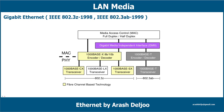To summarize the Gigabit Ethernet versions: IEEE 802.3z was released in 1998 using fiber optic and coaxial cable, with three variants — 1000Base-CX, 1000Base-LX, and 1000Base-SX. IEEE 802.3ab was released in 1999 using twisted pair cable, defined as 1000Base-T.